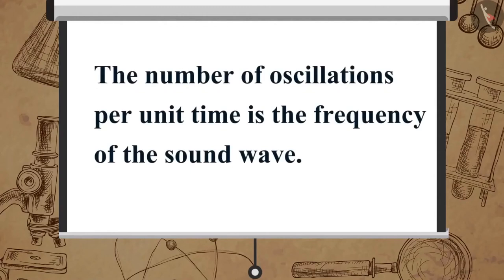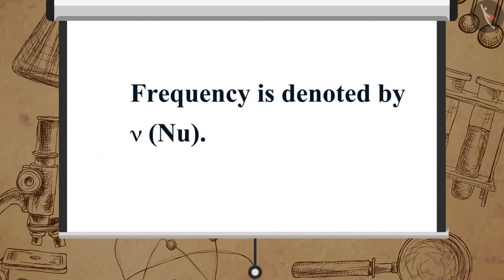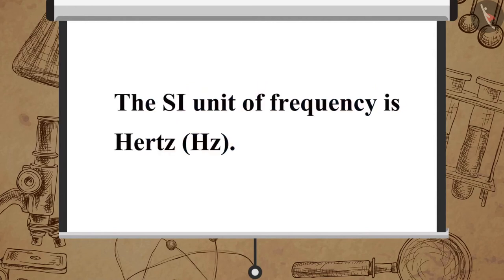The number of oscillations per unit time is the frequency of the sound wave. Frequency is denoted by nu. The SI unit of frequency is hertz.